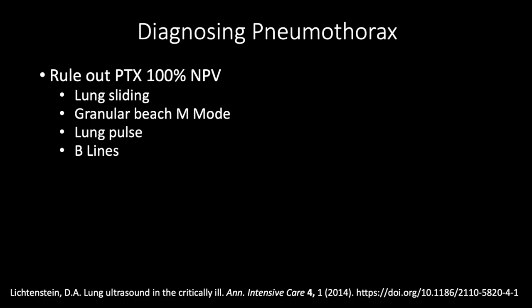How do we diagnose pneumothorax? Loss of lung sliding is indicative of pneumothorax, and when you see lung sliding, that rules it out — the negative predictive value is amazing. If you see lung sliding, a granular beach on M-mode, lung pulse, or B-lines, that completely rules out pneumothorax. B-lines mean the lung is up against the chest wall and you're transmitting ultrasound waves into a wet, soggy lung, so there's no air between you and the lung preventing transmission.